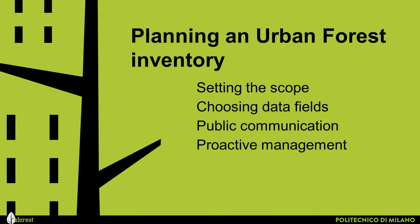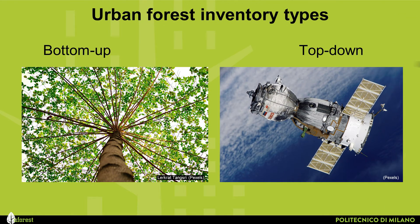The planning of an urban forest inventory includes the following steps: setting the scope, choosing data fields, public communication and proactive management. Basically, there are two types of urban forest inventories: bottom-up and top-down.